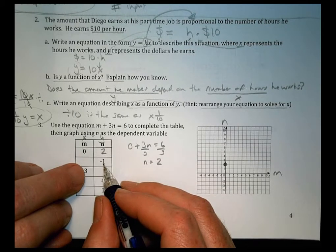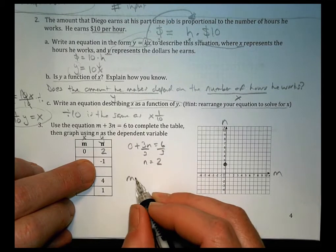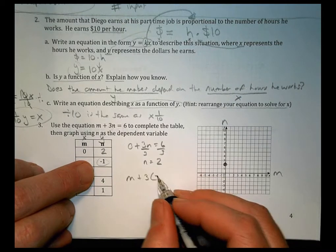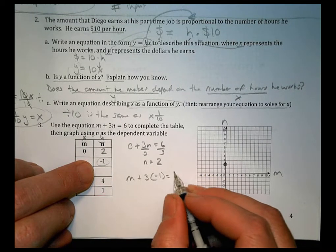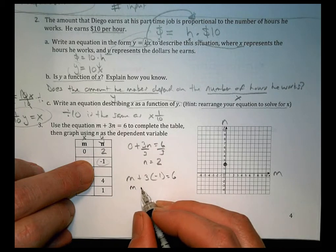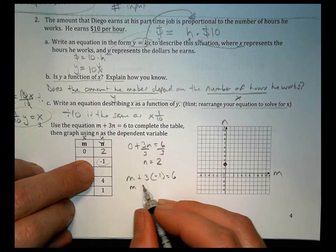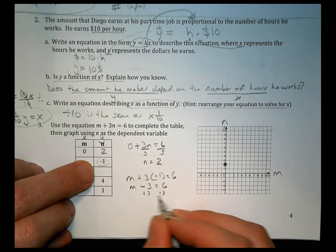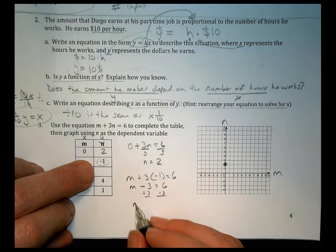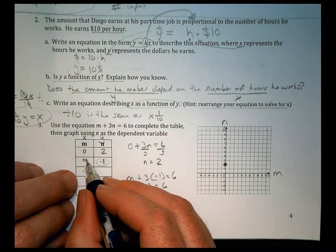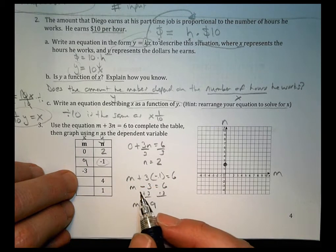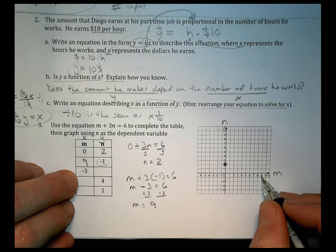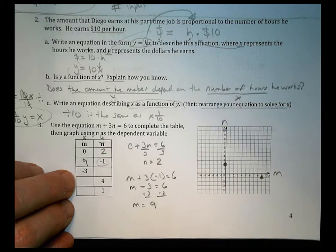On the next one, we have a value for N and not M. So we'll say M plus 3 times, and the value there is negative 1, 3 times negative 1, equals 6. So M, and 3 times negative 1 is negative 3, equals 6. We'll add 3 to both sides. And we see that M equals 9. So when M equals 9, N is at negative 1. So let's find M is at 9, and N at negative 1 is right there. So we have two points.